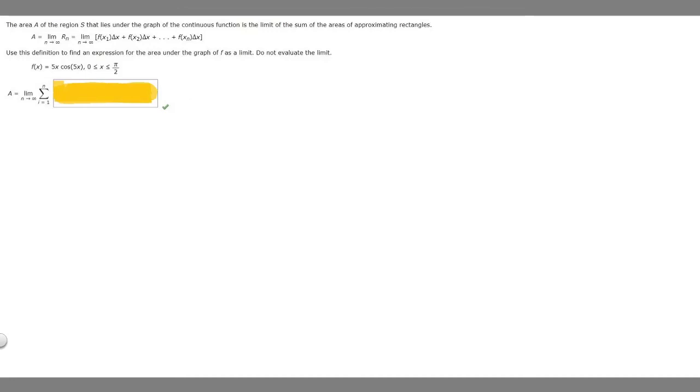In this problem we're told that the area A of the region S that lies under the graph of the continuous function is the limit of the sum of the areas of approximating rectangles. A equals the limit as n approaches infinity. We're told to use this definition to find an expression for the area under the graph of f as a limit. We're told not to evaluate the limit, and we're given f(x) = 5x·cos(5x) from 0 to 2.